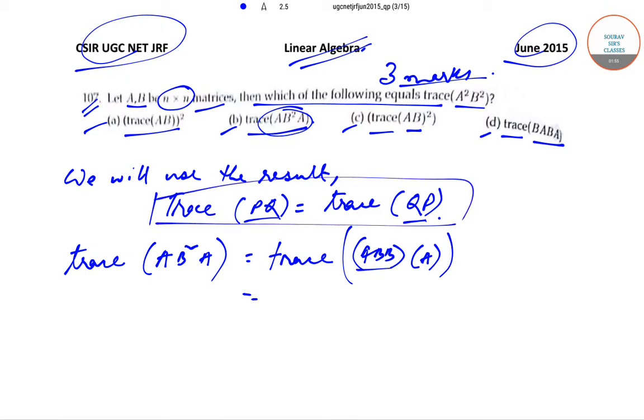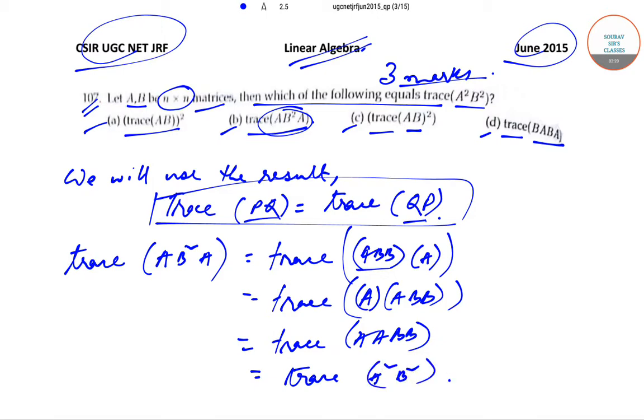the trace of PQ equals trace of QP relation. Then this will come down to trace of A into ABB. So this is the matrix. So now this can be written down as trace of AABB, which can be written down as trace of A²B². So as you can